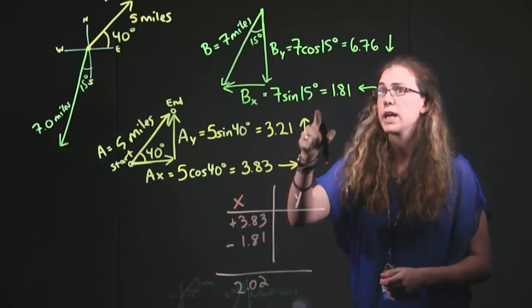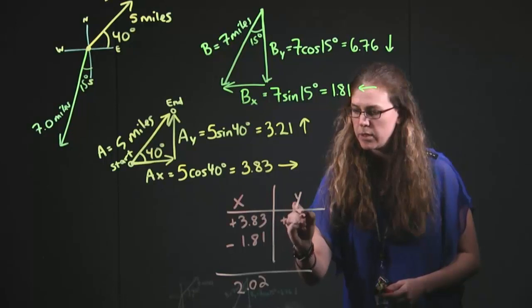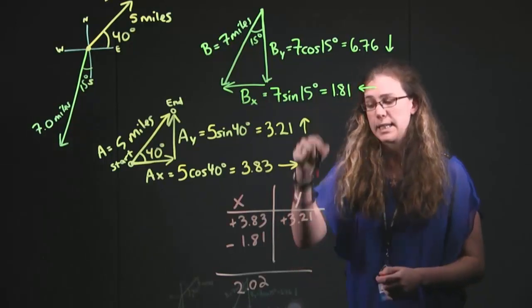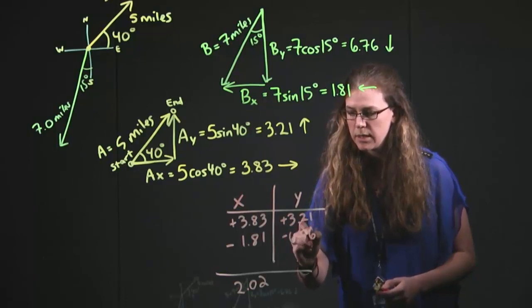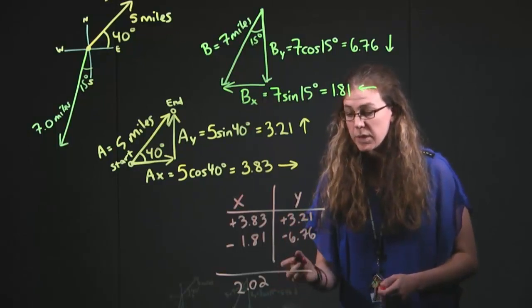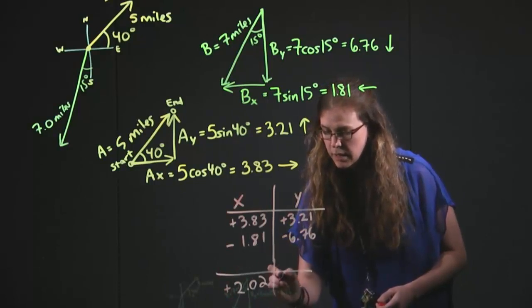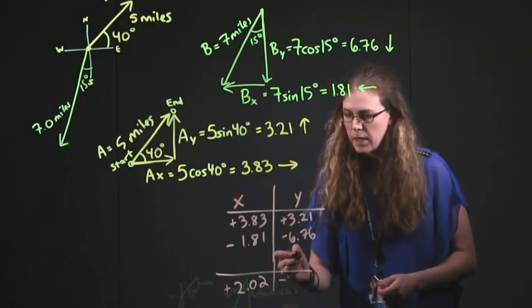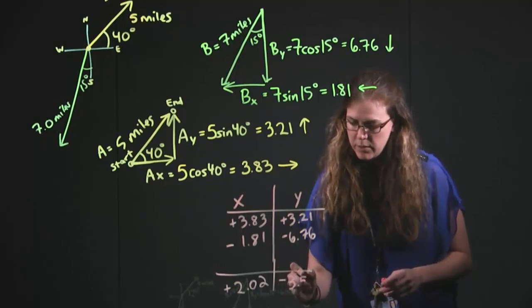For the y's, we have an upwards, so positive 3.21, a downwards negative 6.76, and so we end up with something that ends up being negative, which just means that it's going to be in the downward direction. And so we have negative 3.55.